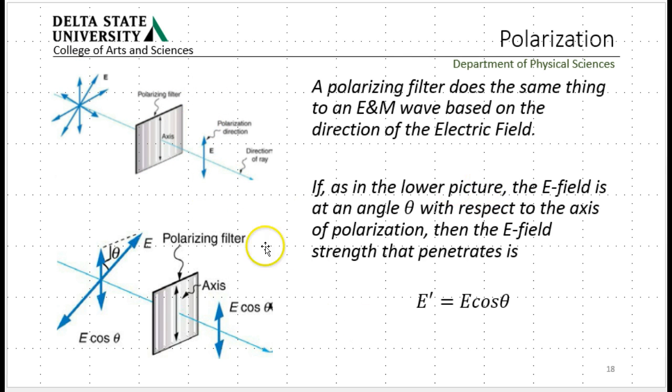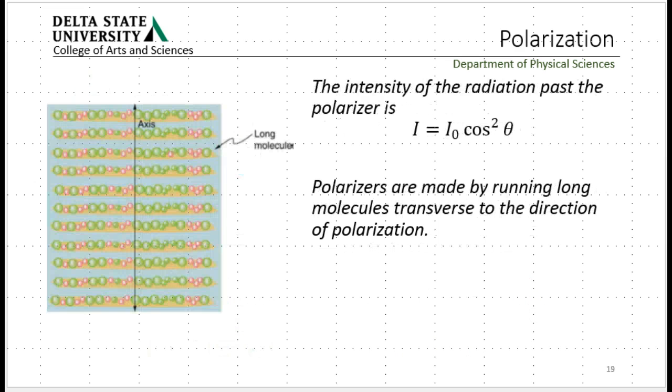Now, if you think of it in terms of the electric field lined up at some angle theta with the vertical, what gets through is just E cosine theta. The result is that the intensity on the other side depends on cosine squared theta. Remember, intensity goes as electric field squared, so the intensity after the polarizer goes as cosine squared theta.